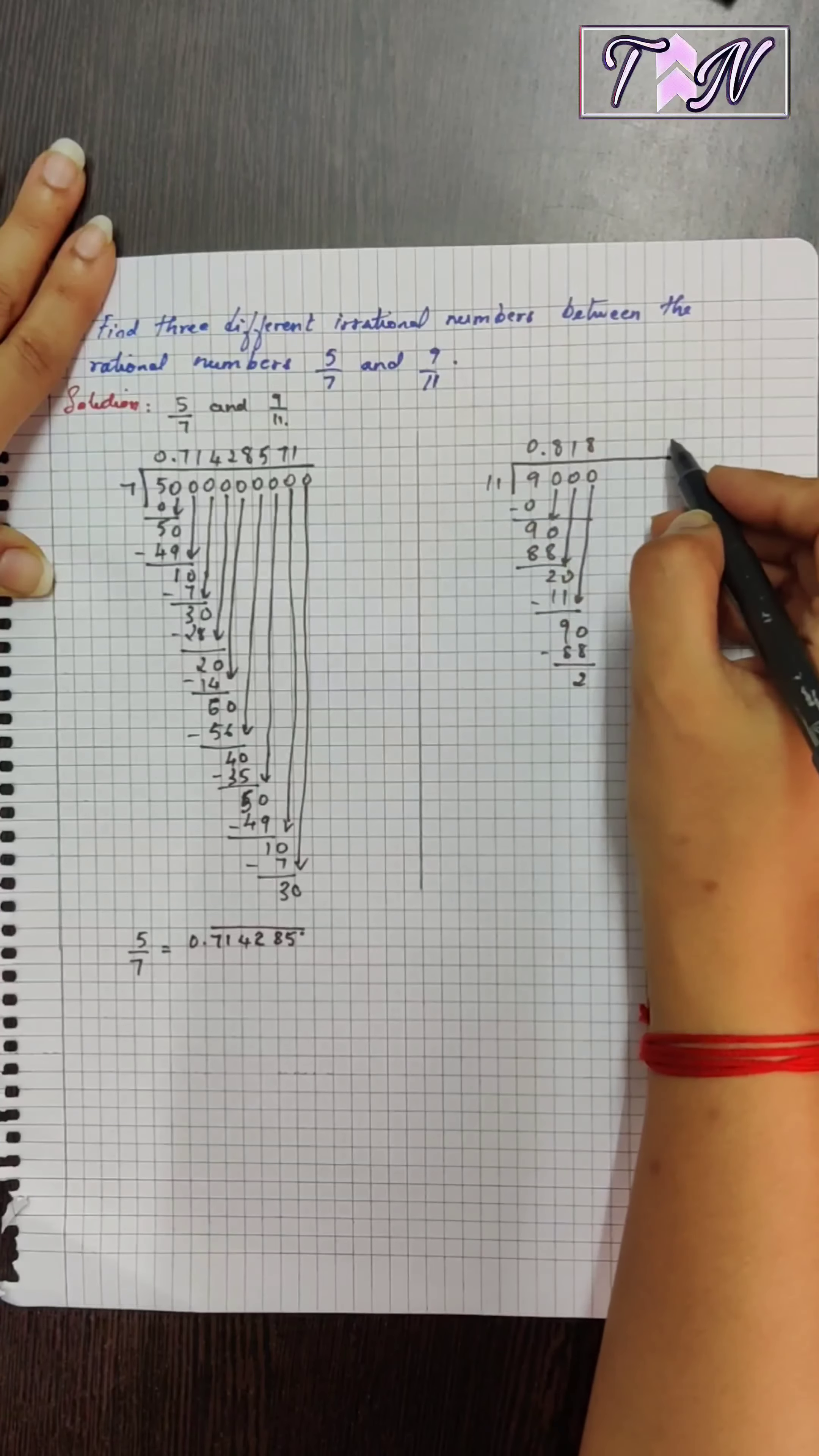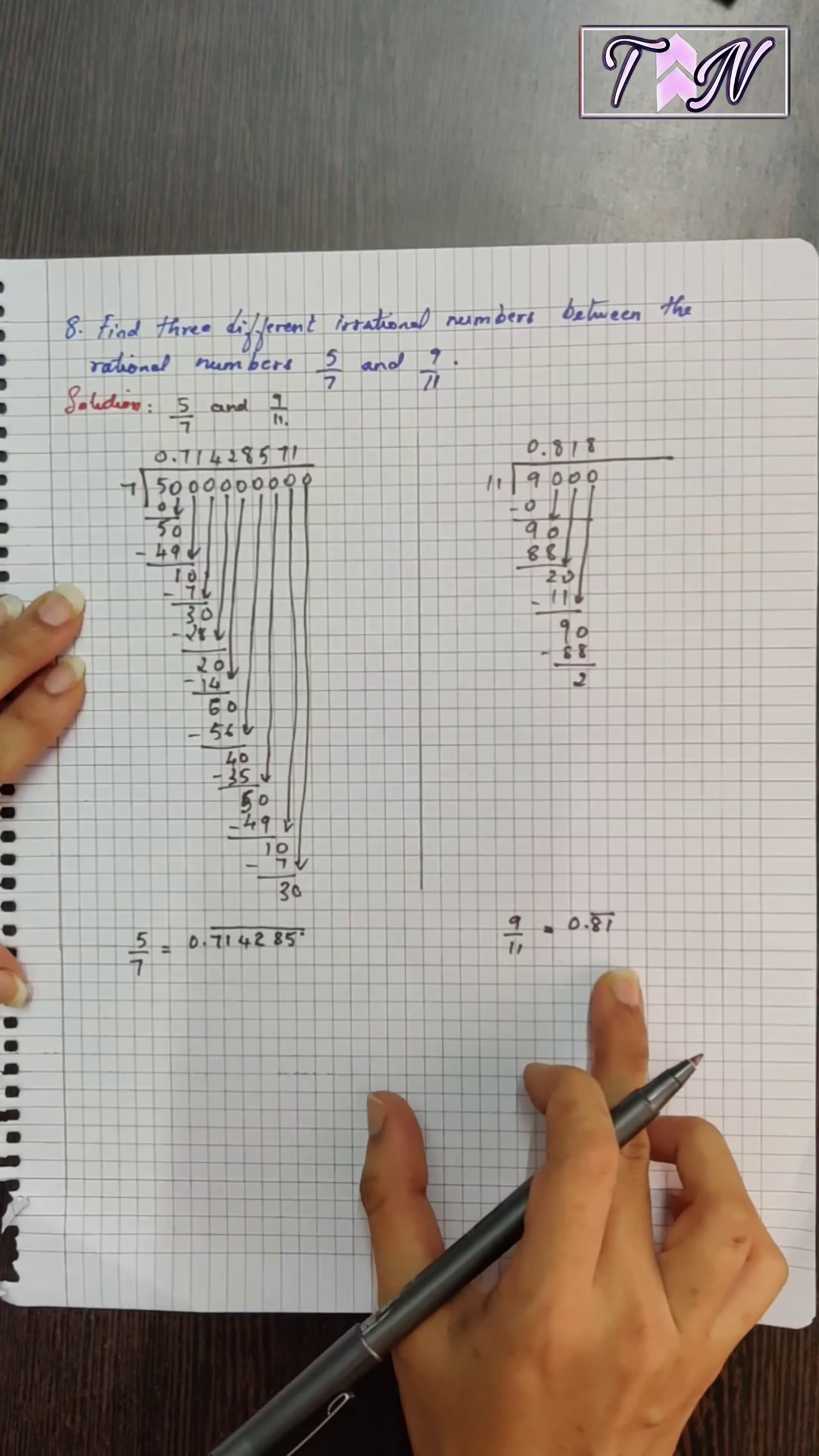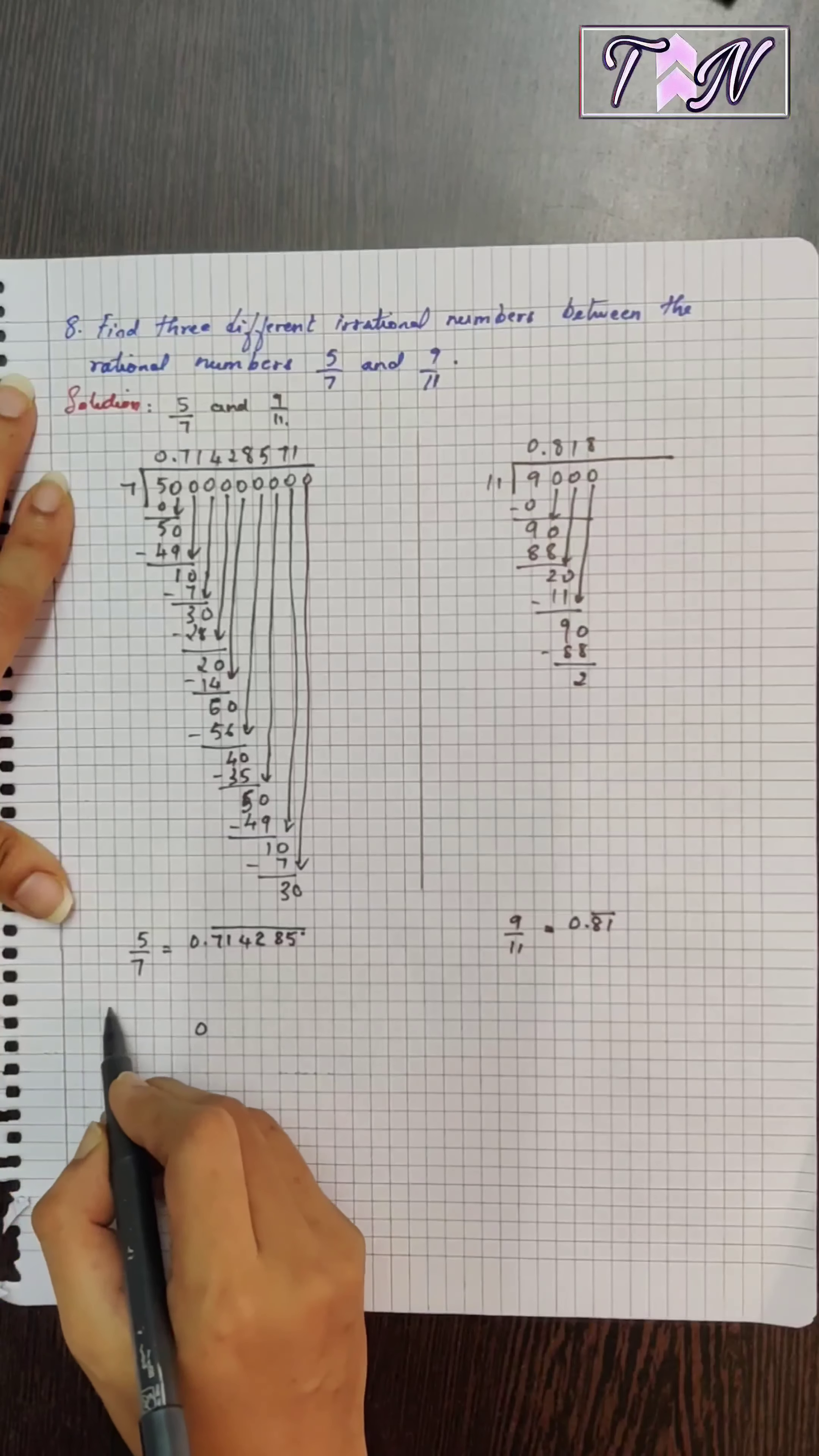So you can see it goes on repeating. This pattern is same as this. So the decimal expansion of 9 by 11 is equal to 0.81 bar. That means this block repeats. So we have two rational numbers here. We have to find out three irrational numbers between this. First off, I'll write three irrational numbers between 5 by 7 and 9 by 11.